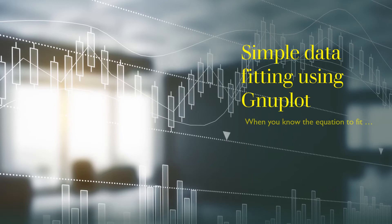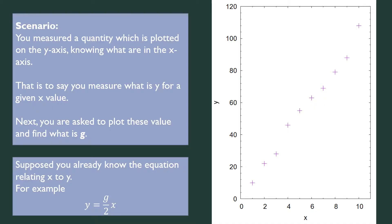We are going to see how to fit this data in the situation where you know exactly the equation to be fitted. Here is the scenario: you measure a quantity plotted on the Y axis based on what X is. For example, when X equals 1 you measure Y and get some value. You have a series of X and Y values, and you need to find G, where the equation relating Y to X is given by Y equals G over 2X.